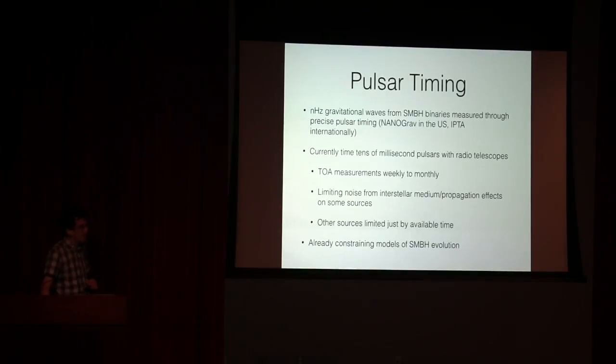A separate topic is understanding the nanohertz gravitational wave background from supermassive black holes as measured through pulsar timing. This is a project that a number of us in this room are part of through the NANOGrav collaboration, and there are also international analogs in Europe and Australia. Currently our program is that we time tens of millisecond pulsars with radio telescopes. We time them every week to month, and we assemble very high quality timing measurements of these objects and look at the residuals to understand is there an underlying joint background.